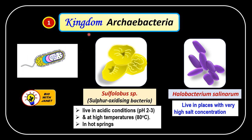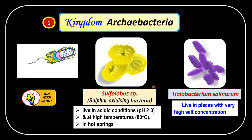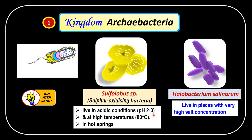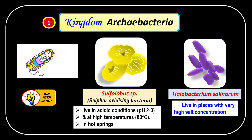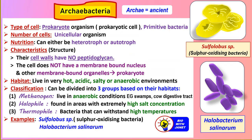The first kingdom we are going to study is Kingdom Archaebacteria, sometimes called primitive or ancient bacteria. They have a special ability to live and thrive in very extreme conditions. Examples are Sulfolobus species, sulfur-oxidizing bacteria that live in acidic conditions of pH 2 to 3 at about 80°C in hot springs, and Halobacterium salinarium, which lives in places with high salt concentration such as the Dead Sea.